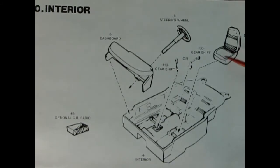Now panel 10 shows our bucket seats going into the interior tub. You have a choice of gear shift levers. You got this nice steering wheel here and the dashboard. And our optional CB radio. 10-4 good buddy.